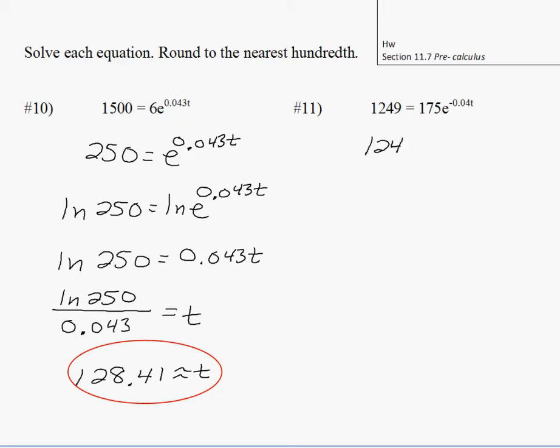Number 11, done very similar. Biggest difference between this one and number 10 is 175 does not go into 1249 evenly. So you just write it as a fraction. It gets you the e by itself.